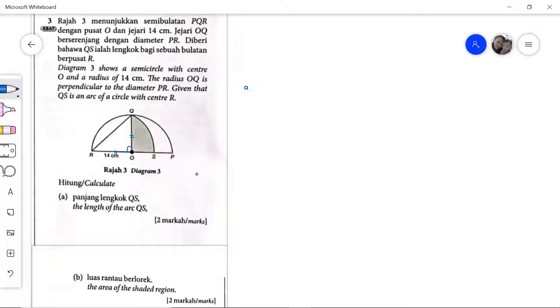We can apply the Pythagorean theorem. If you want to find the angle, we can use the trigonometric ratio. Now given that QS is the arc of a circle with center R. To make it much clearer, this is the sector mentioned in the question.